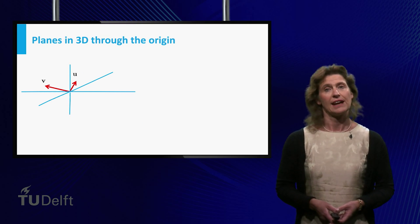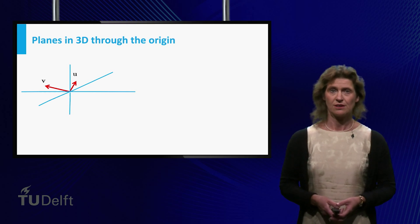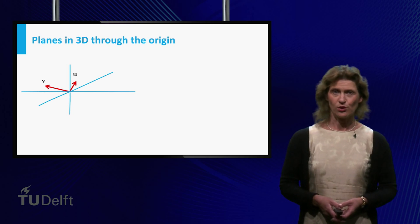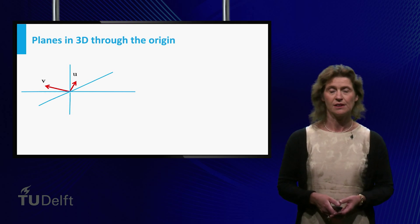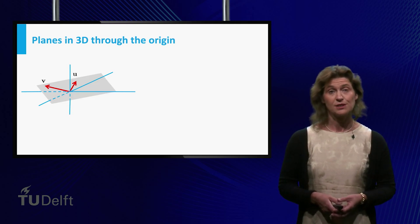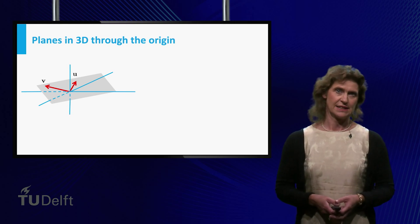Now that you know how to represent lines in space, let's turn to planes in three-dimensional space. What is a suitable way of representing those? When you have two vectors u and v, you can construct a plane spanned by these vectors. How can this plane be represented?